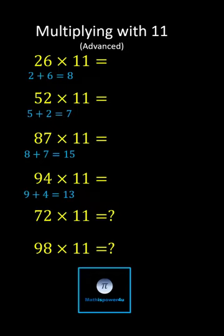For 26 times 11, the first digit is 2, the last digit is 6, the middle digit is 8. For 52 times 11, the first digit is 5, the last digit is 2, the middle digit is 7.